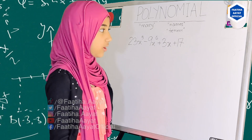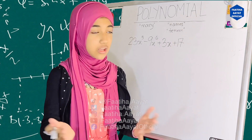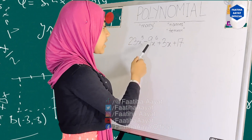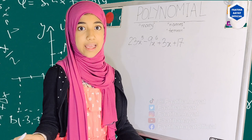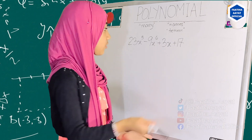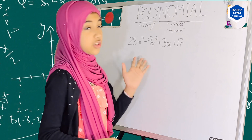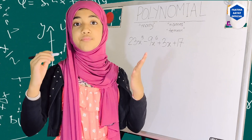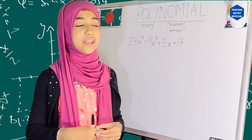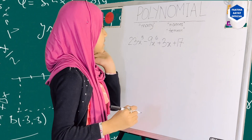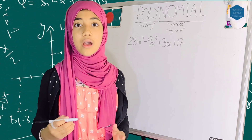Why is this a polynomial? Because all of the numbers here actually have non-negative integers as their powers. Even though these two terms don't have any written power, they're still essentially to the power zero, which is not negative. Here x to the power six — six is non-negative. And x to the power five — five is also a non-negative integer. That's why it is a polynomial.